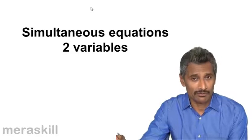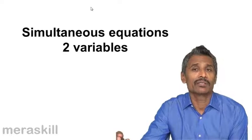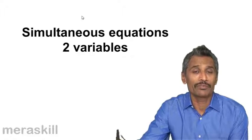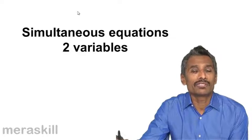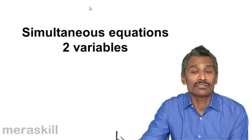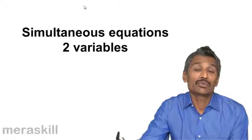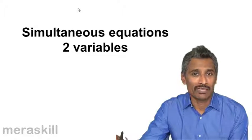In fact one of the major ways this is elimination method or you have equating the coefficient method, in all of them what you're going to observe is that we're going to convert, simplify the simultaneous equations and convert them into an equation with one variable.